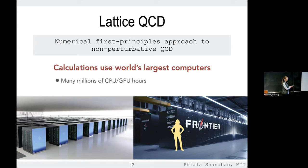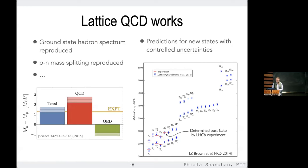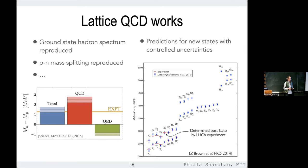These integrals are extremely computationally expensive — some calculations I'll show would have taken something like 250,000 years on a laptop. We use the largest supercomputers available: Frontier, the US's first exascale machine currently being commissioned; Fugaku in Japan, previously the largest supercomputer in the world. We use years of supercomputer time, and it works — yielding systematically improvable, precise, controlled results. It's really only in the last decade that we've reached this level of precision and control in these numerical methods.